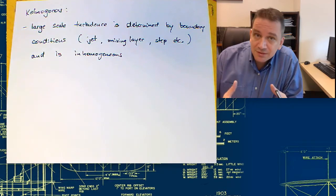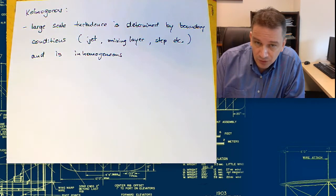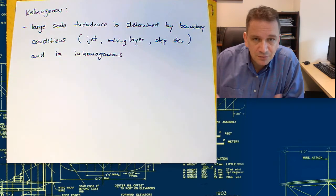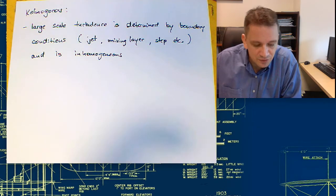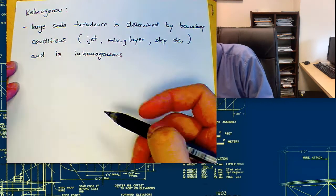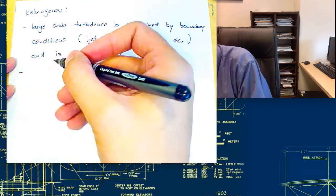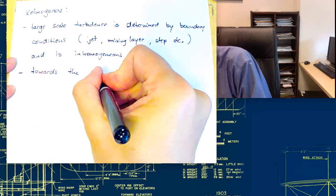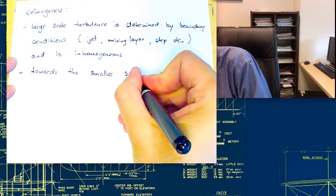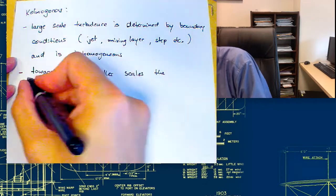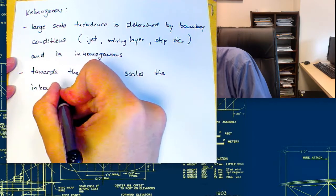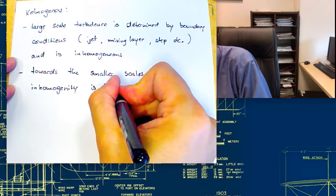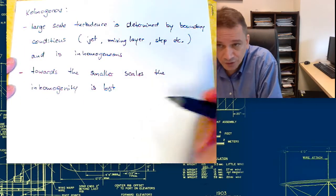But once these large-scale structures start to break up into smaller ones, the small-scale turbulence becomes more homogeneous, more universal. Towards the smaller scales, the inhomogeneity is lost, and the turbulence becomes more universal.